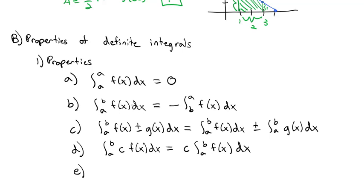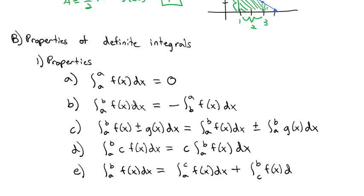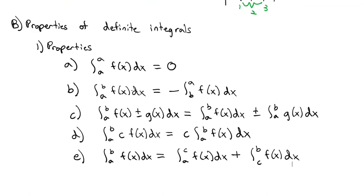Fifth property: the integral from A to B of f(x) dx can be split at any intermediate point C. We can write it as the integral from A to C of f(x) dx plus the integral from C to B of f(x) dx. These five properties help us evaluate several definite integrals.